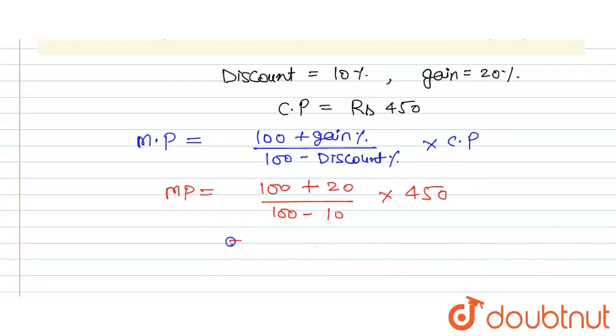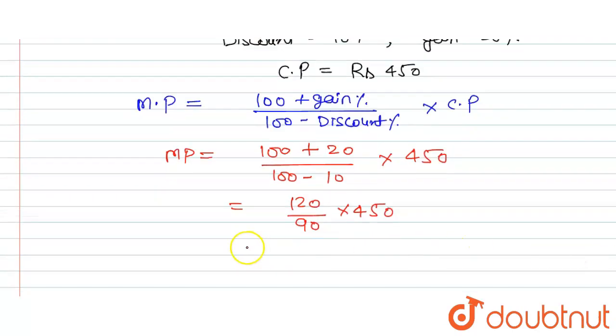So this is equal to 120 upon 90 into 450. So 10 cancels it out, and 45 will be with 9, that is 5 times. So 120 into 5, so this is equal to 600. Okay, so marked price is 600.